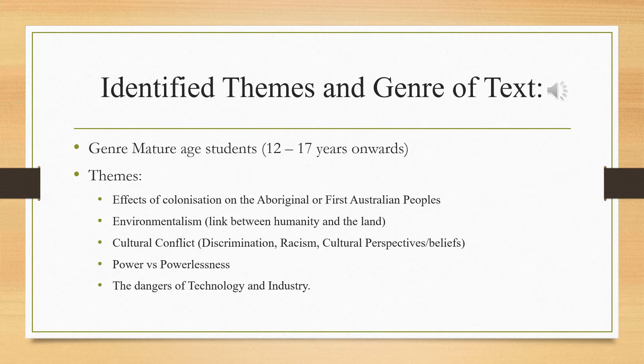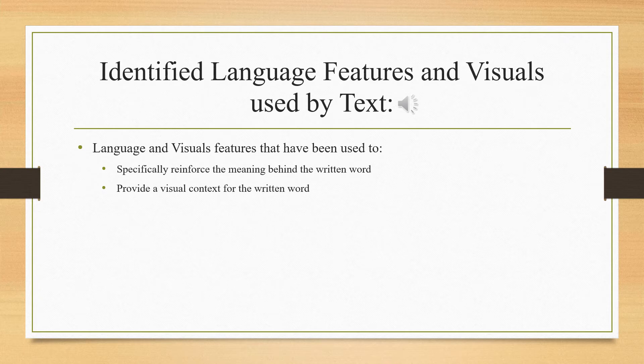The text is a picture book; however, due to its themes, it can be said that the audience is that of a mature reader. The dominant themes of the story include the effects of colonisation on the Aboriginal or First Australians people, the concept of environmentalism, the link between humanity and the land, cultural conflict, discrimination, racism, and cultural perspectives and beliefs.